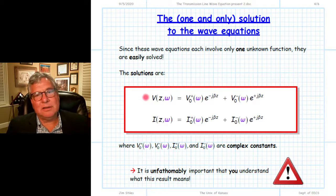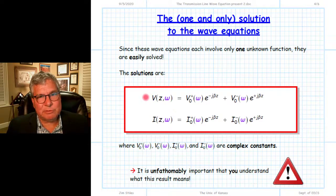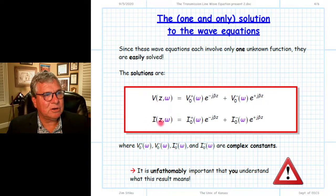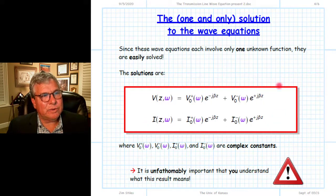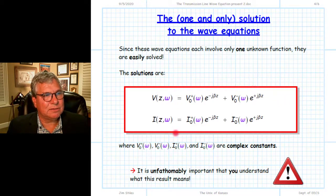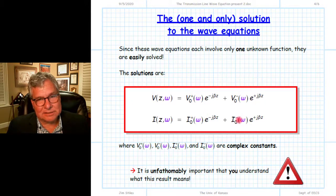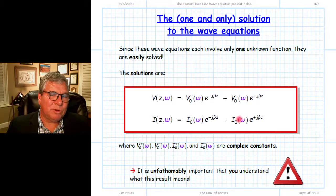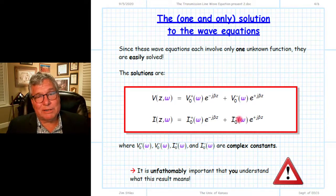Any physical oscillation along a transmission line results in a complex voltage and complex current with respect to position that can be written in this form — every solution. The question, of course, is what are these four complex constants? That will depend on ultimately what is attached to the transmission line.